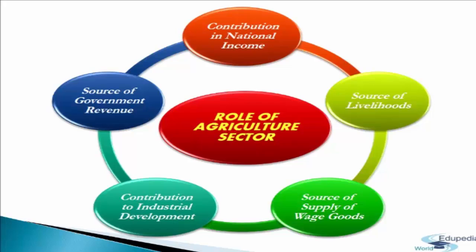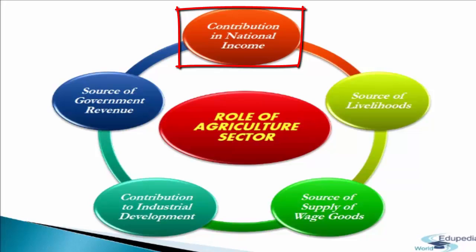These are some of the special features of Indian agriculture. Now we come to the role of the agricultural sector. Agriculture is the basis of the Indian economy since more than 60% of India's population depends directly or indirectly on agriculture as a source of livelihood, and more than 70% of the population lives in rural areas. The first consideration is contribution of agriculture to national income. At present, agriculture contributes 14.5% to India's GDP, although in 1950–51 its share was more than 50%.